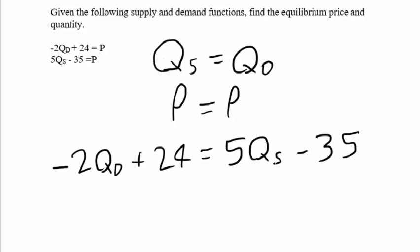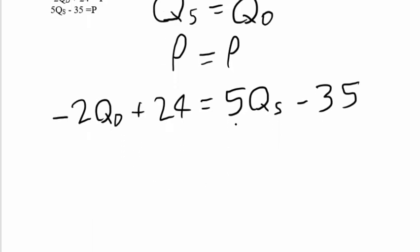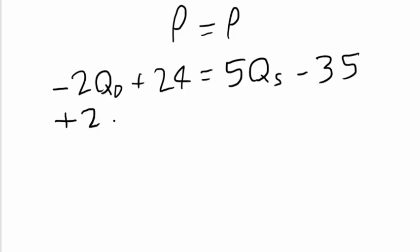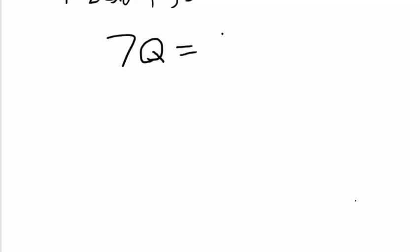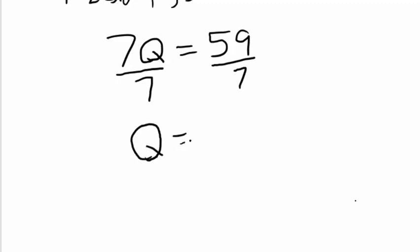So we set negative 2 times quantity demanded plus 24 equals 5 times quantity supplied minus 35. Since quantity demanded and quantity supplied are equal in equilibrium, we treat them as the same variable. Adding 2Qd to both sides and 35 to both sides gives us 7 times our equilibrium quantity equals 59. Dividing both sides by 7, we get an equilibrium quantity of 8.43.